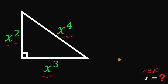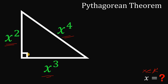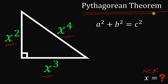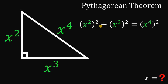To answer this question, we will use one theorem. Since we have a right triangle, we will use the Pythagorean theorem: a squared plus b squared equals c squared, where a and b are the legs and c is the hypotenuse. Applying this to our right triangle, we have x squared raised to the power of 2, plus x cubed raised to the power of 2, equals x raised to the fourth power — the hypotenuse — raised to the power of 2.